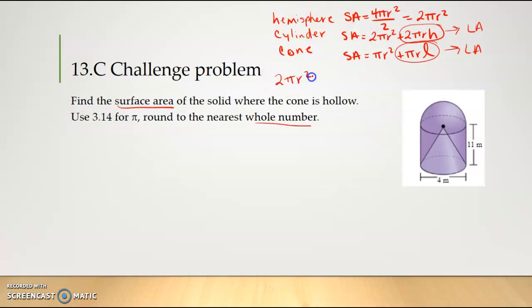I need to take the hemisphere which is 2πr² plus the lateral area of the cylinder so 2πrh plus the lateral area of the cone πr(slant height). This is going to give me my surface area. I could plug into that and chug, or I can break it into three separate parts. I'm going to break it into three separate parts.